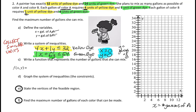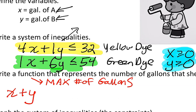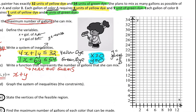Before we graph, let's write a function to represent the number of gallons. We're trying to maximize the number of gallons, so our objective function is f(x, y) = x + y. Now let's graph the lines. The first constraint in slope-intercept form is Y ≤ -4X + 32, giving a Y-intercept of 32 and slope of negative 4. That's our yellow dye constraint.